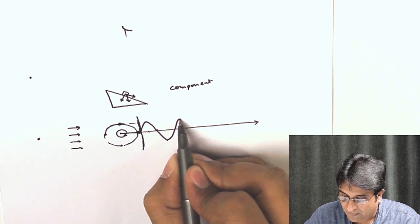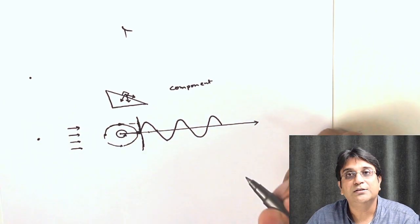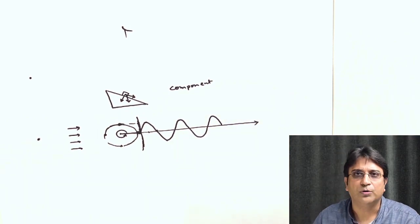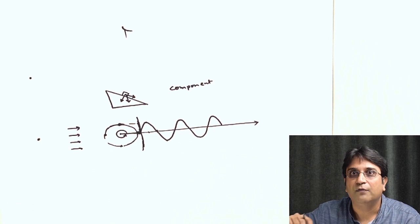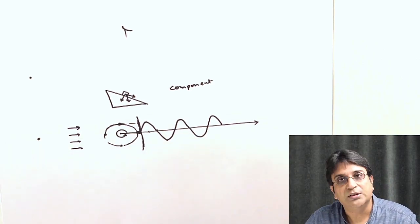So as this keeps on rotating, it keeps on generating this graph. Now, if it becomes faster, you'll see the graphs become more crowded. And as it becomes slower, the graph kind of spreads out. This particular shape is known as a sinusoid.